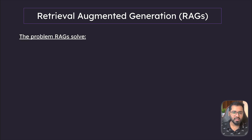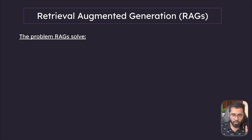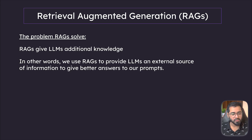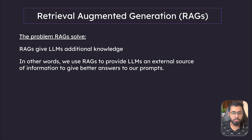So what is RAGs and what is the problem that it solves? RAGs solve just one problem with LLMs — just one problem — and that is giving LLMs additional knowledge. Just remember that for now. RAGs basically provide an external source of information to LLMs so that LLMs can better answer the user's questions.